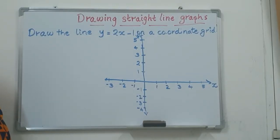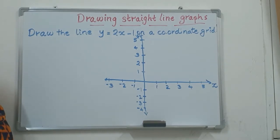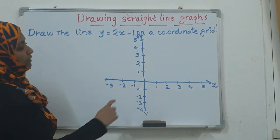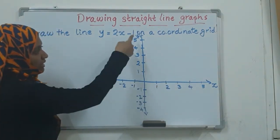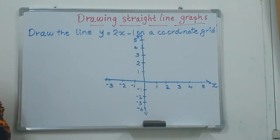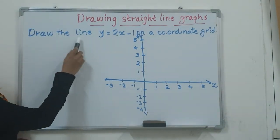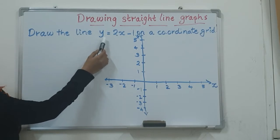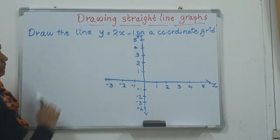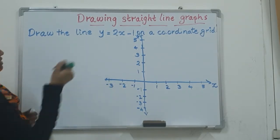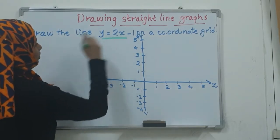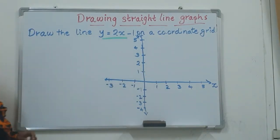Hi all, today we are going to discuss drawing straight line graphs. How do we draw an equation of a straight line on a coordinate grid? My question is to draw the line of equation y equals 2x minus 1 on a coordinate grid.